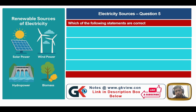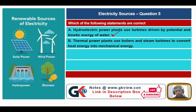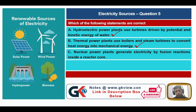Question number five: which statements are correct? Statement A — hydroelectric power plants use turbines driven by potential and kinetic energy of water — is true. Statement B — thermal power plants use boilers and steam turbines to convert heat energy into mechanical energy — is also true. Statement C — nuclear power plants generate electricity by fusion reactions inside a reactor core — is false; it should be fission, not fusion.